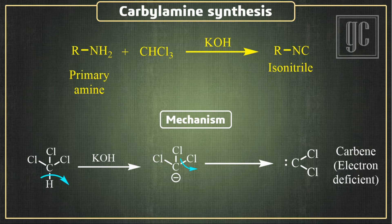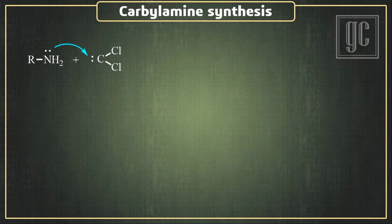The carbene acts as an electrophile in the presence of two electron-withdrawing chlorine atoms. The primary amine then attacks the electrophilic carbene and an intermediate is formed, in which the nitrogen atom carries a positive charge while the carbon atom carries a negative charge.